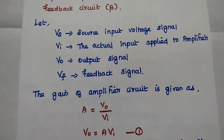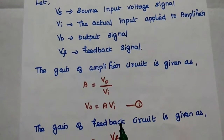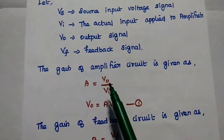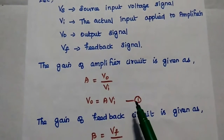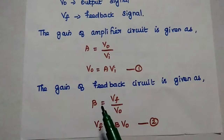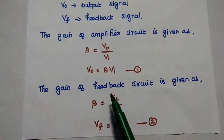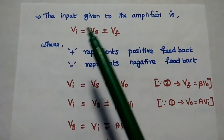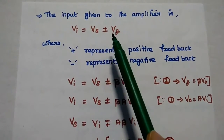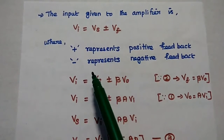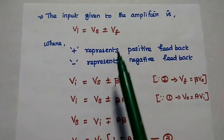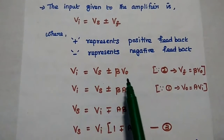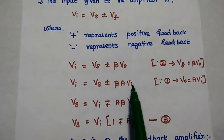Let Vs be the source input voltage, Vi the actual input to the amplifier, V0 the output signal, and Vf the feedback signal. The gain of the amplifier circuit is A = V0/Vi, giving us V0 = A·Vi — this is equation 1. The gain of the feedback circuit is beta = Vf/V0, giving us Vf = beta·V0 — this is equation 2. The input to the amplifier is Vi = Vs ± Vf. Substituting Vf = beta·V0 and V0 = A·Vi: